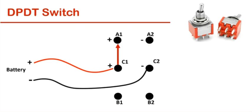When we push the lever upwards, then middle pins will connect to B1 and B2. And these two pins will get positive and negative polarity.